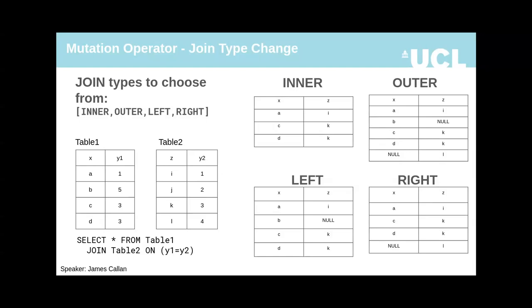There are four types of join. Some joins discard rows with no matches, others don't. If we can change the join type and get smaller results, the transmission of these results will be faster and therefore the query will be faster.